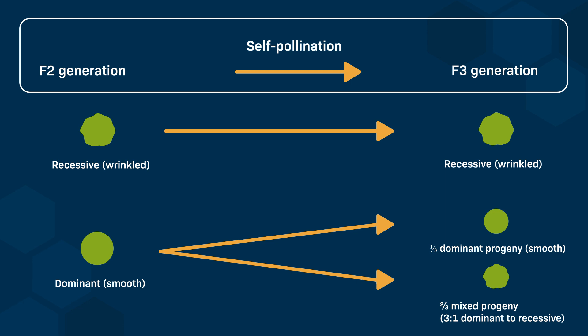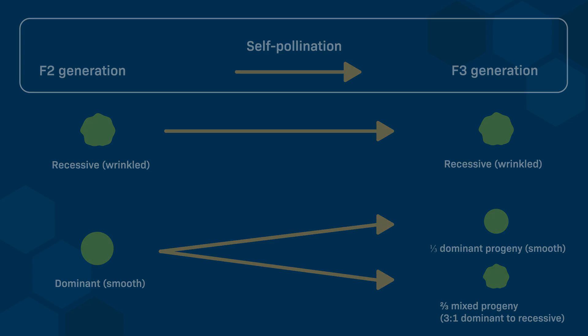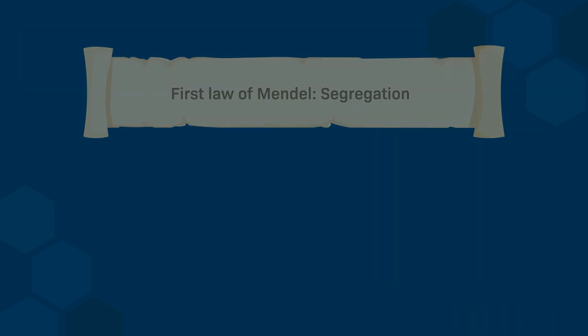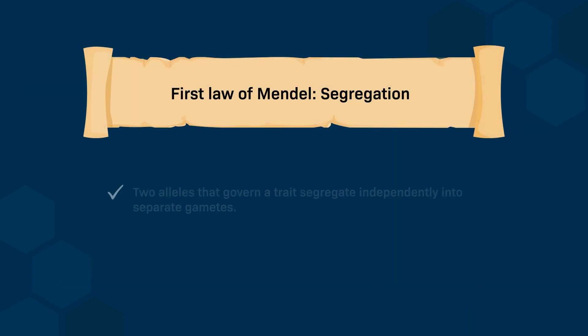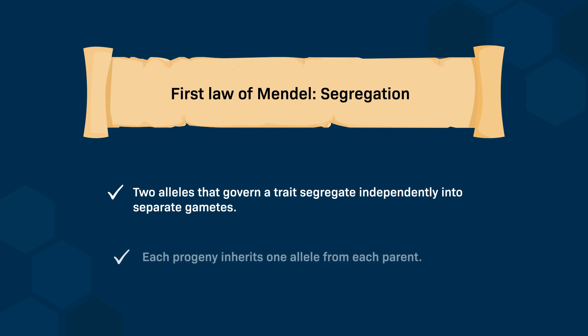The analysis of the phenotypic ratio in the F3 generation confirms the independent segregation of alleles, allowing Mendel to postulate his first law — the Law of Segregation: two alleles governing a trait segregate independently into separate gametes, and each progeny inherits one allele from each parent.